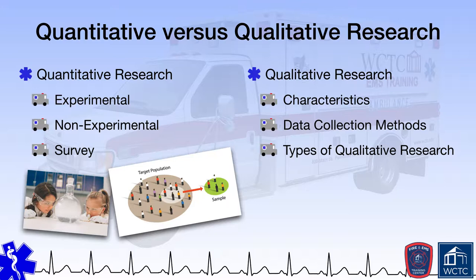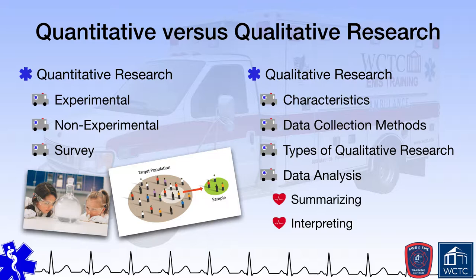Focus groups, open-ended surveys, and the evaluation of other documents and records are common data-gathering techniques in qualitative research. The resulting data is typically compiled through the identification of common themes, which is summarized and then interpreted by the researcher within the context of the study.